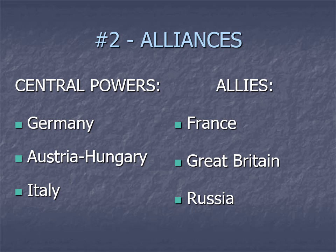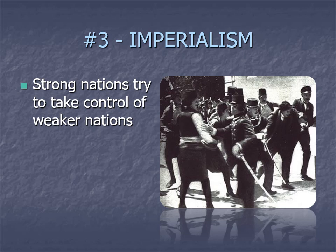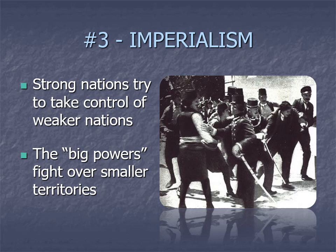The third cause of World War I is imperialism, which you should already know a lot about since we just studied United States imperialism. Strong nations trying to exercise political, social, or economic control over weaker nations — we've seen it take place with the United States in Alaska, Hawaii, Cuba, the Philippines, Puerto Rico, and Guam. But we're not the only imperialists. Other countries with big militaries are trying to do the same thing, and we've used the example of Africa being carved up like a pie.